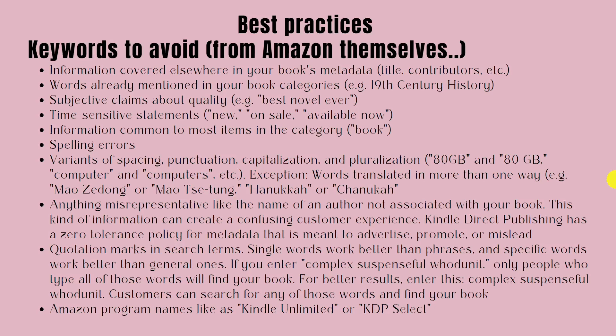For example, '80 gigabytes' and '80 space gigabytes' — it can work that out for you. Anything misrepresentative, like the name of an author not associated with your book. So trying to steal traffic by using somebody who's doing really well — using their author name like Jade Summer if you're making a coloring book, for example — that would be against their terms and conditions. Quotation marks in the search terms — single words work better than phrases, and specific words work better than general ones. If you enter 'complex, suspenseful, whodunit' without quotation marks, customers who search for any of those words will find your book. That's basically showing you that Amazon will move your words around whatever order you put them in, and use all the words in different orders and sequences to find the right customer for you.